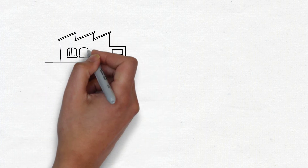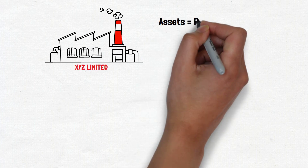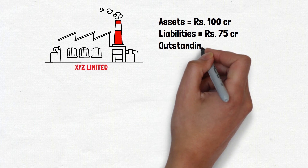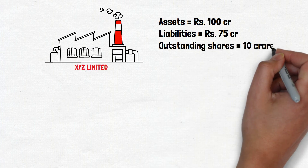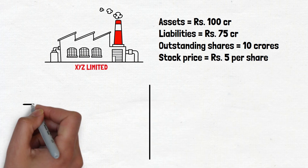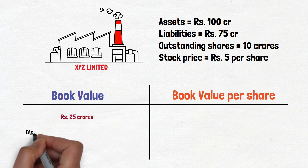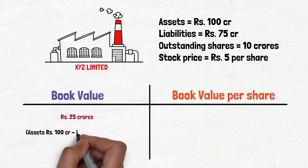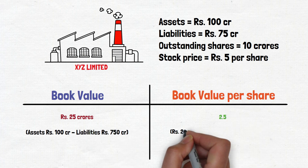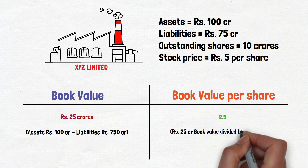Let's understand this with an example. Let's say that a company named XYZ Limited has the following information: assets equal to rupees 100 crores, liabilities equal to rupees 75 crores, outstanding shares equal to 10 crores, and stock price equal to rupee 5 per share. We first calculate the company's book value and book value per share. The book value will be rupees 25 crores — that is rupees 100 crores in assets minus rupees 75 crores in liabilities. The book value per share will be rupees 2.5, that is 25 crores book value divided by 10 crores shares.